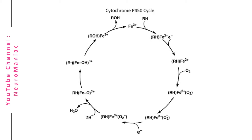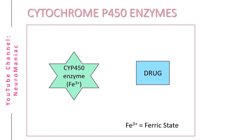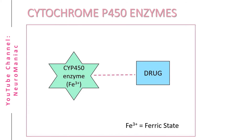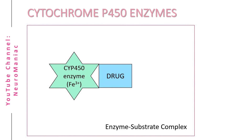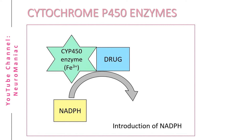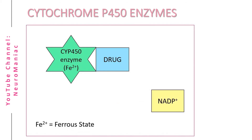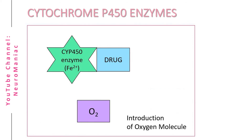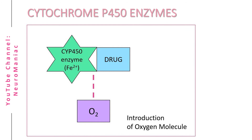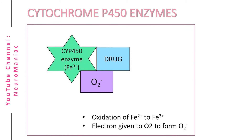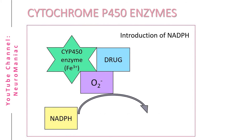Remember, CYP450 enzymes are a heme protein, meaning this enzyme has an iron cation in the ferric state. To begin the phase one reaction, a CYP450 enzyme–drug complex is formed. This complex is then reduced with the presence of NADPH, meaning the iron has gained an electron from NADPH. This results in a ferrous complex and NADP+. Then an oxygen molecule reacts, oxidizing Fe²⁺ to form an Fe³⁺–O₂⁻–drug complex.